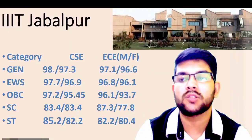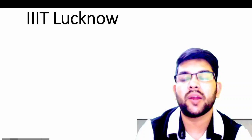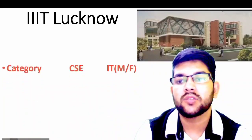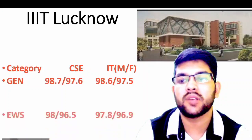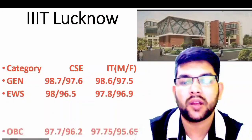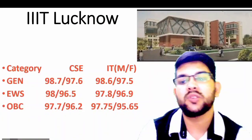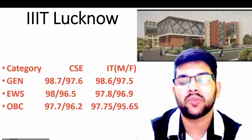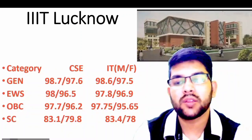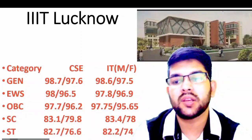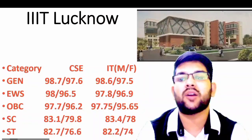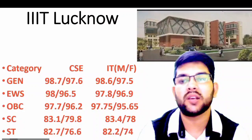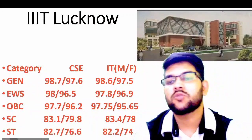Next is IIIT Java. Here is the information. For general category: 98.7 and 98.6. For EWS: 98 and 97.8. For OBC: 97.7 and 97.75. For SC: 83.1 and 83.4, and for ST: 82.7 and 82.2 percentile — that is for male candidates, CSC and IT branch. For female candidates, check after the slash.